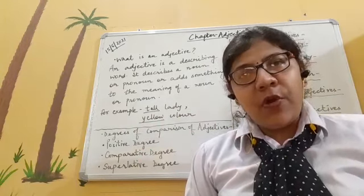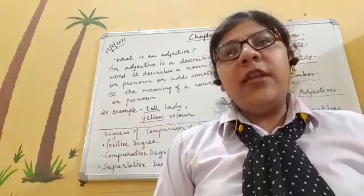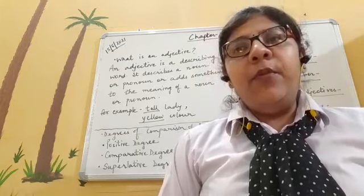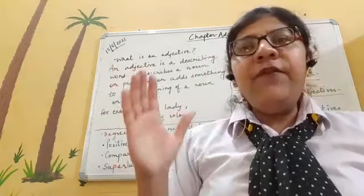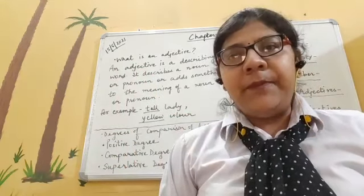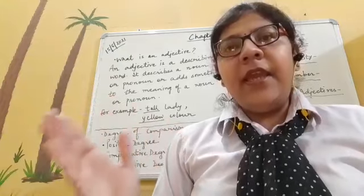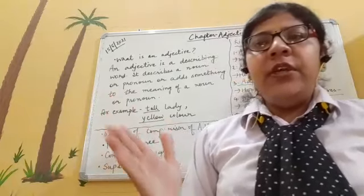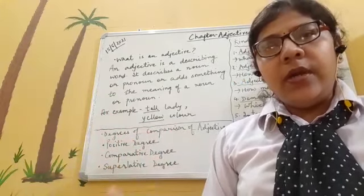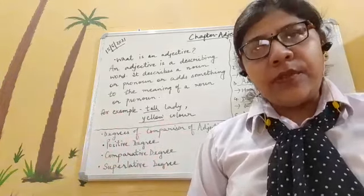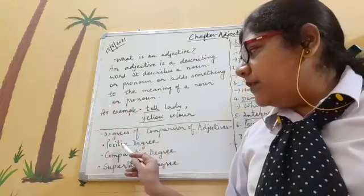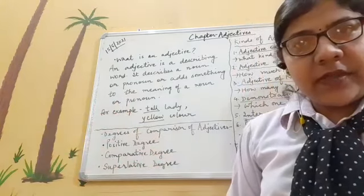To form the comparative degree, add '-er,' and to form the superlative degree, add '-est.' If you cannot add -er or -est, use 'more' or 'most' — for example, beautiful, more beautiful, most beautiful. If an adjective ends in 'y,' like 'happy,' the forms are happy, happier, happiest. Some adjectives change form entirely: good, better, best; bad, worse, worst; much, more, most; little, less, least.